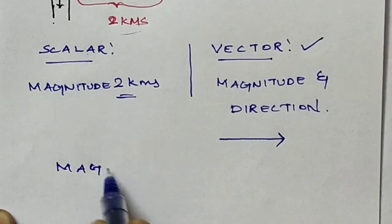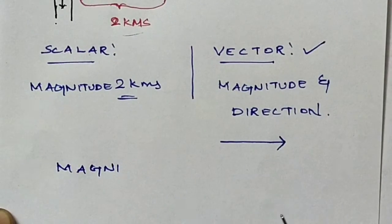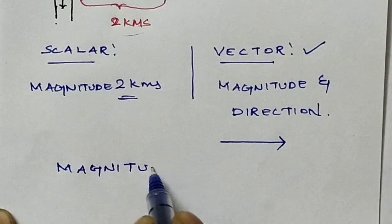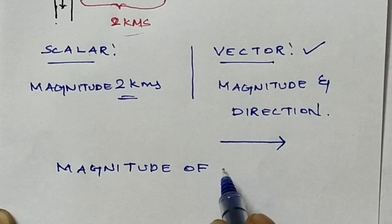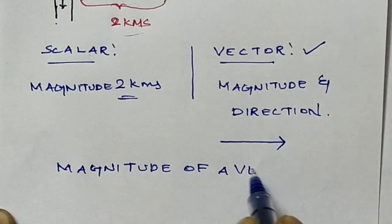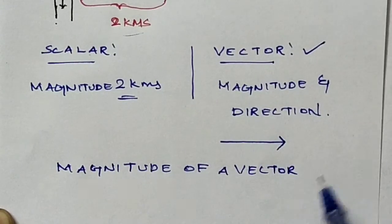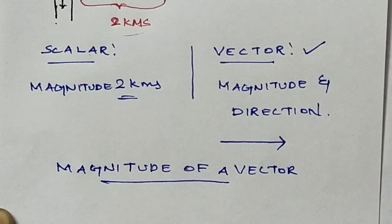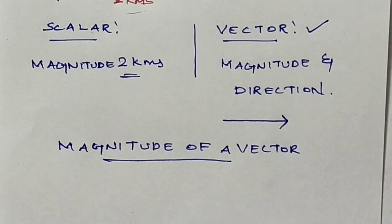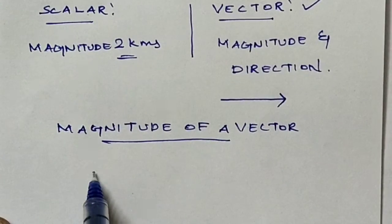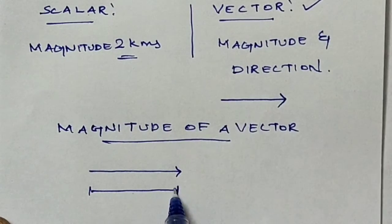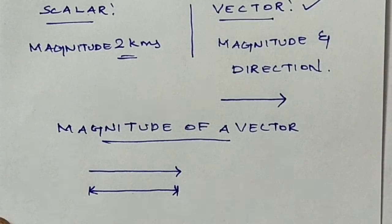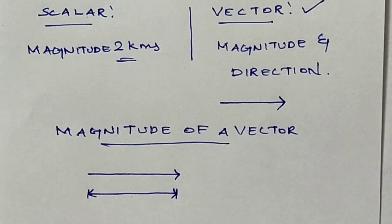A vector uses both magnitude and direction. Now moving to the magnitude of a vector, also called the norm of a vector. The magnitude of a vector means the length of the vector. That length is called the magnitude of the vector.